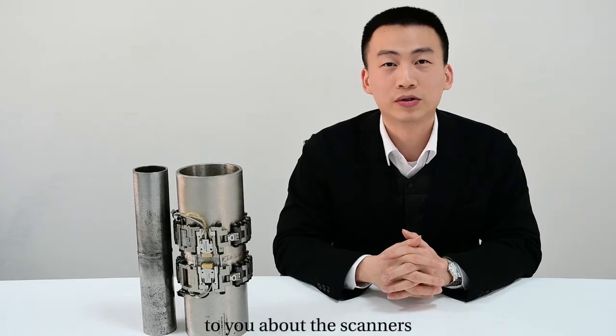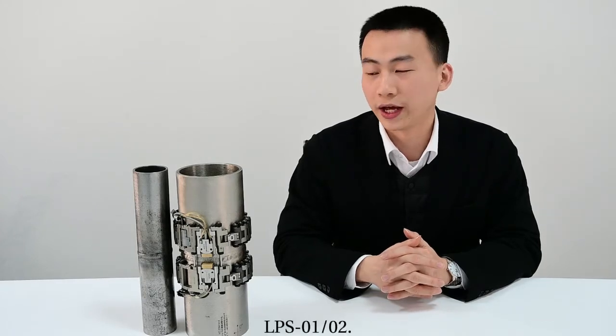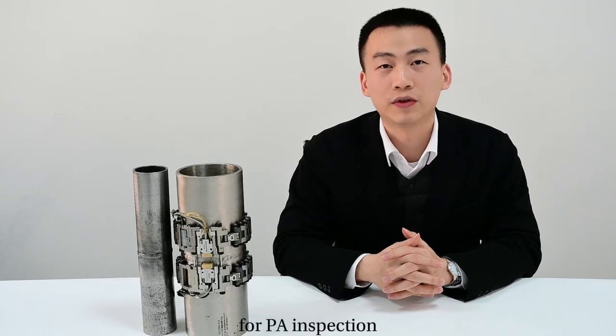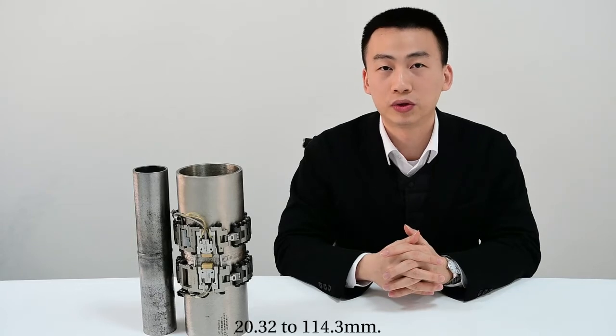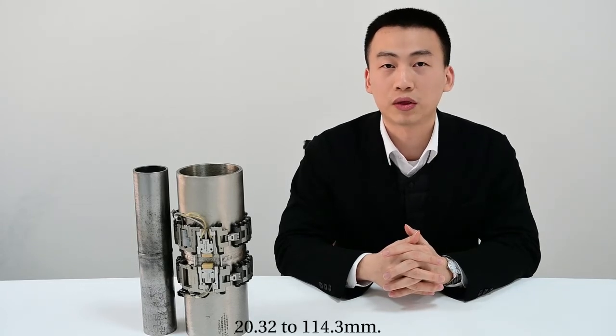Now I would like to introduce the scanners LPS-01 and LPS-02. These two scanners are suitable for phased array inspections on pipes with outside diameter from 20.32 to 114.3 millimeters.